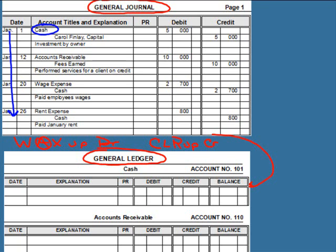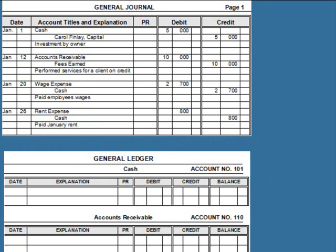So we're going to start with the cash account. We look at all the headings in the general ledger until we find cash. The numbering system helps us find the account — since cash is an asset, assets start with one. A large company can have more than 10,000 accounts, so it's really important to understand the numbering system. Once you find the account in the general ledger, we transfer the information from the general journal. The first thing we transfer is the date.